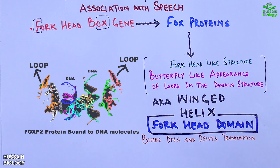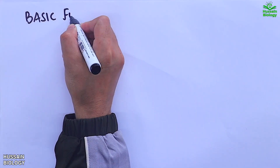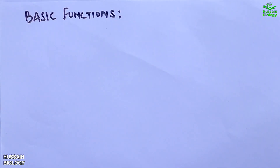The FOXP2 protein also contains a polyglutamine tract, a zinc finger motif, a leucine zipper motif, and the FOX head box DNA binding domain.